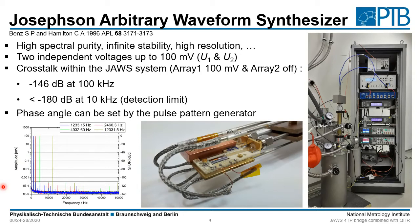To obtain two independent voltages, we split our chip into halves with one array on each side and close every loop as much as possible. Afterwards we cover this part with a metal cap to minimize the crosstalk between both signals. By doing so we achieve a crosstalk of about 146 dB at 100 kHz, and at 10 kHz this crosstalk is already below the detection limit of about minus 180 dB.